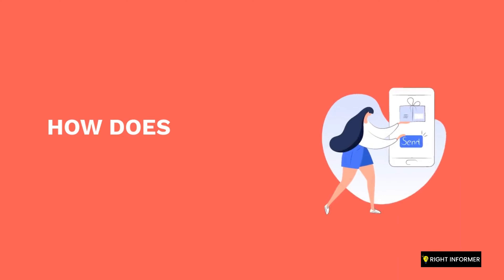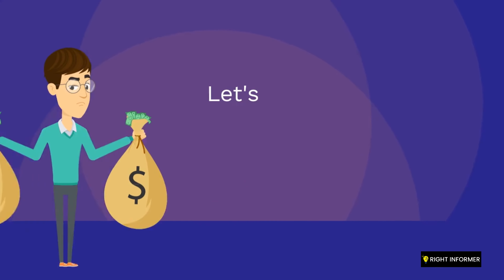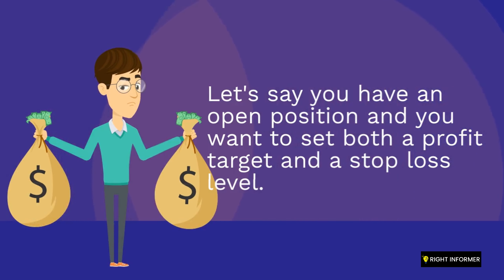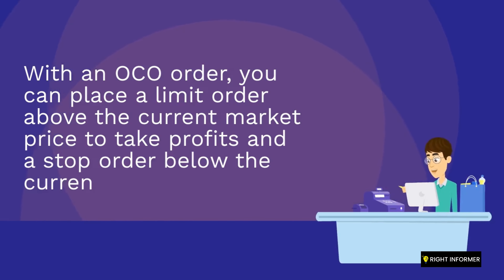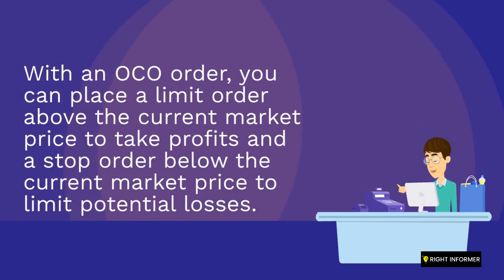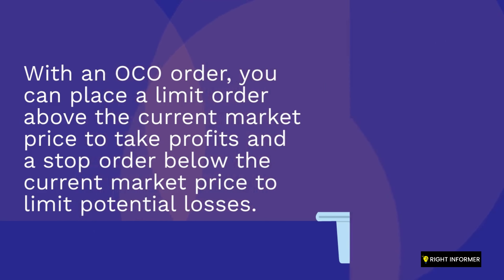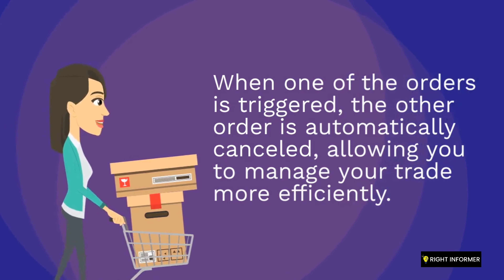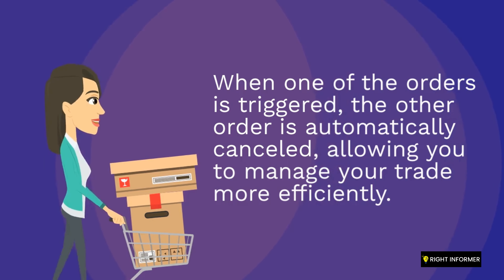How does an OCO order work? Let's say you have an open position and you want to set both a profit target and a stop loss level. With an OCO order, you can place a limit order above the current market price to take profits, and a stop order below the current market price to limit potential losses. When one of the orders is triggered, the other order is automatically cancelled, allowing you to manage your trade more efficiently.